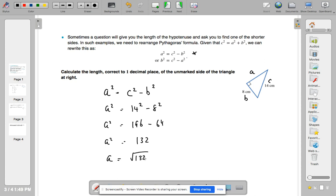So working that out in our calculator, it's going to be 11.49. So A equals 11.49.